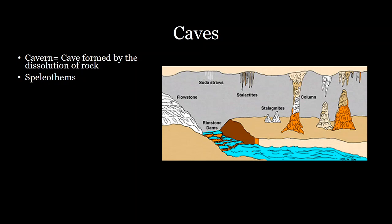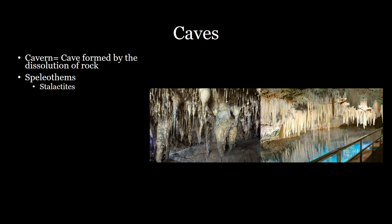Within these caves we have a lot of different speleothems — features formed by the dissolution and deposition of carbonates within the cave system. You can see them here and we'll go through each of them. The first is stalactites. Stalactites form when water seeps into a cave system from the ceiling and drips down, and as it drips, the calcite dissolved in that water gets deposited in this dripping form.